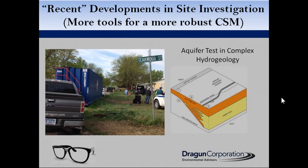This is a site we're currently working on in the middle of the United States — a very complex Cold War era legacy site where we have a definite deadline and an important mission: to protect the health and environment of a community of 50,000 people. There's a massive amount of TCE in the subsurface, with over 10 plumes, some of which are thousands of feet long, moving into residential, commercial, and educational districts.